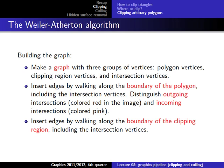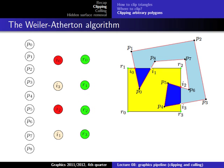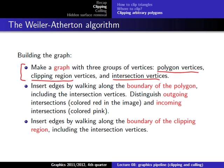To build this graph, we start by creating the nodes. For each polygon vertex we have a node; for each clipping region vertex we have a node; and for each intersection vertex we have a node. So polygon vertices P0 to P8 give us nodes, intersections I0 to I3 give us nodes, and the four corners of the clipping region give us four more nodes. Now we enter the edges in two steps.